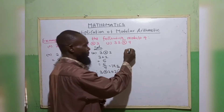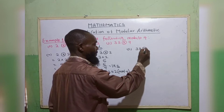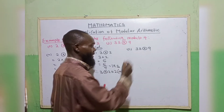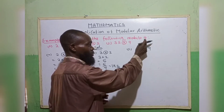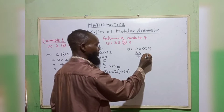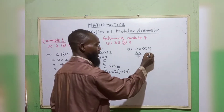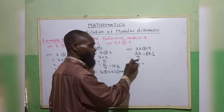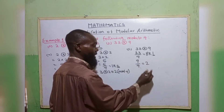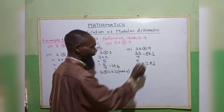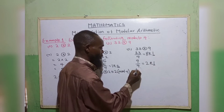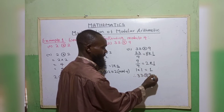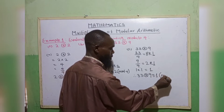The third one, we have 33 multiplied by 9. Since 33 is a larger number, we can reduce 33 first: 33 divided by 4 gives 8, and 8 times 4 is 32, remainder 1. Then for 9: 9 divided by 4 gives 2, and 4 times 2 is 8, remainder 1. We multiply the remainders together: 1 multiplied by 1 gives 1. Therefore, 33 multiplied by 9 is congruent to 1 in modulo 4.